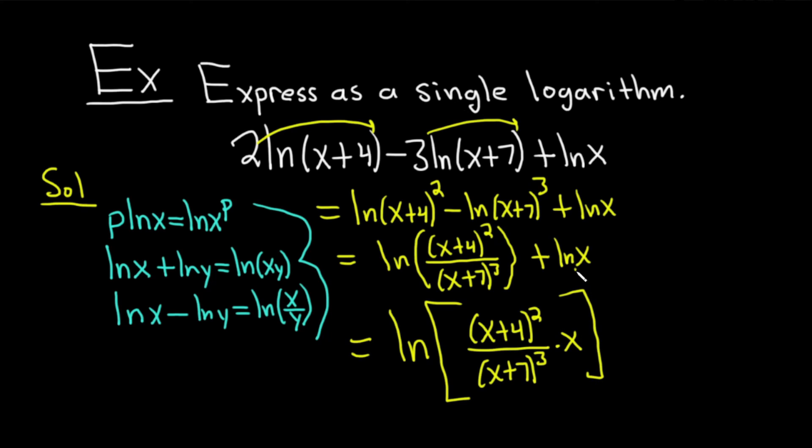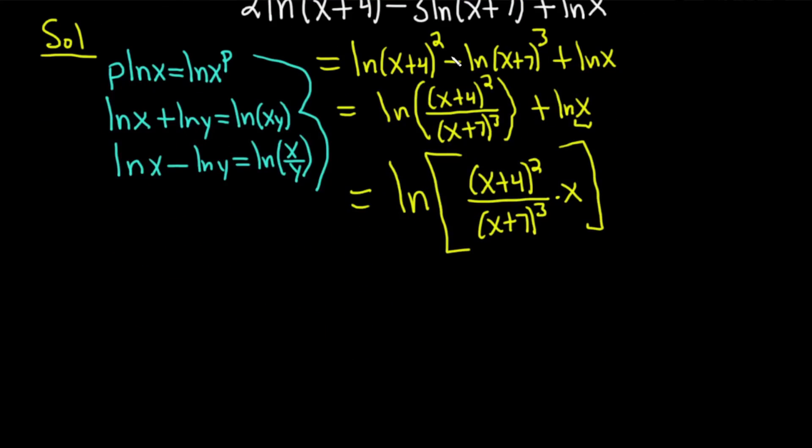(x+4)^2 / (x+7)^3 times x, right? Because this is your second piece. So basically we take this entire thing, (x+4)^2 / (x+7)^3, and we multiply it by x. And honestly, you could leave your answer like that. It might be better to put the x in the front. So I'm going to write it like this. Natural log of, I'll put the x upstairs, x(x+4)^2 / (x+7)^3.